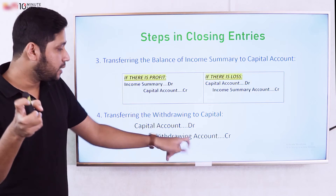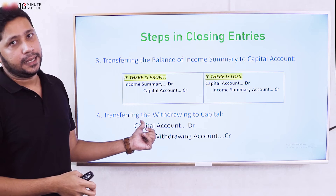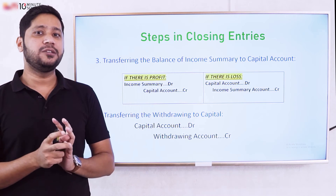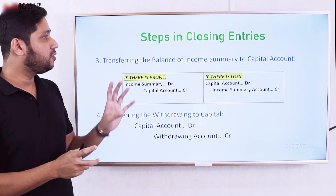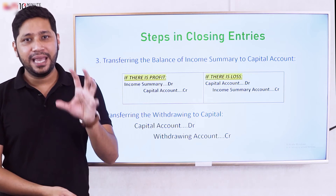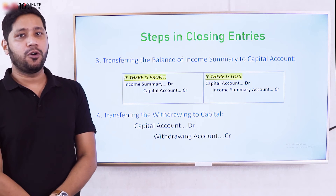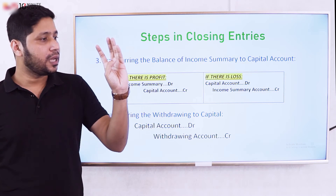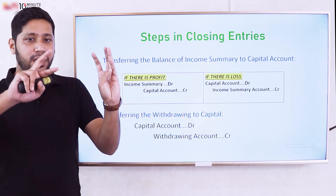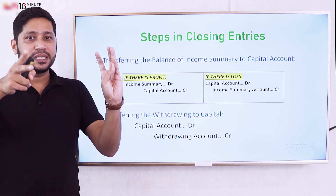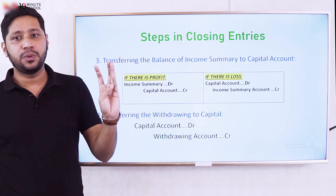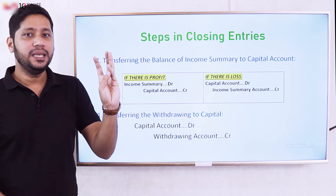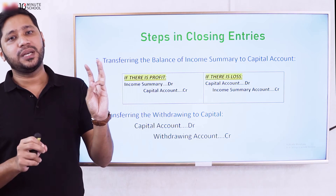This is how we do the closing entry — it is a four-step process. First, we close the revenue; second, we close the expenses; third, we close the balance of the income summary to capital; and lastly, we transfer the withdrawals to capital.